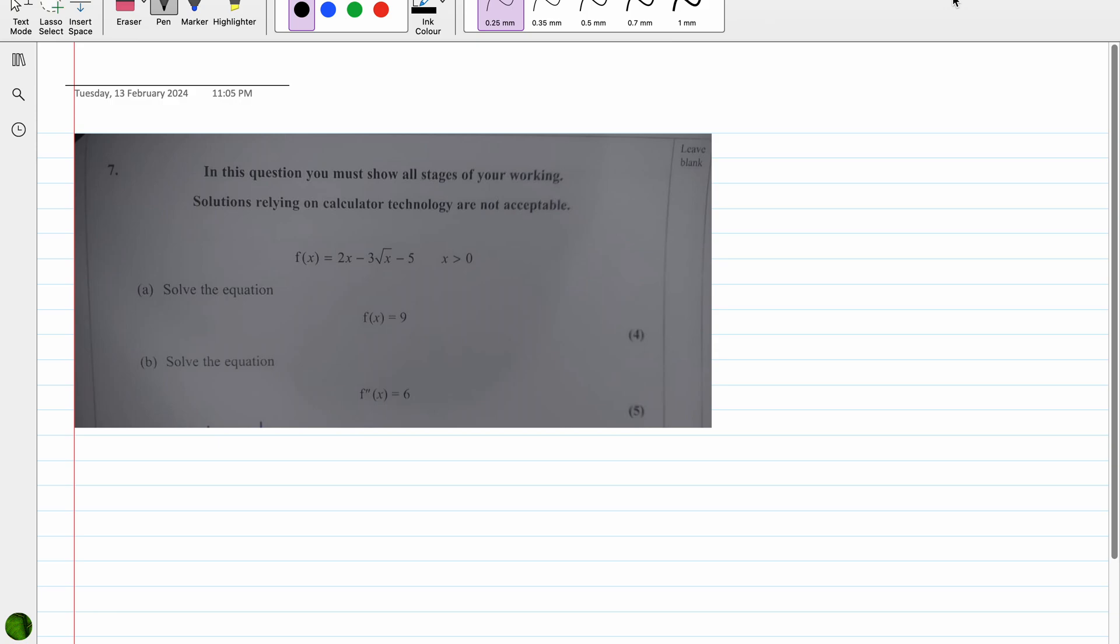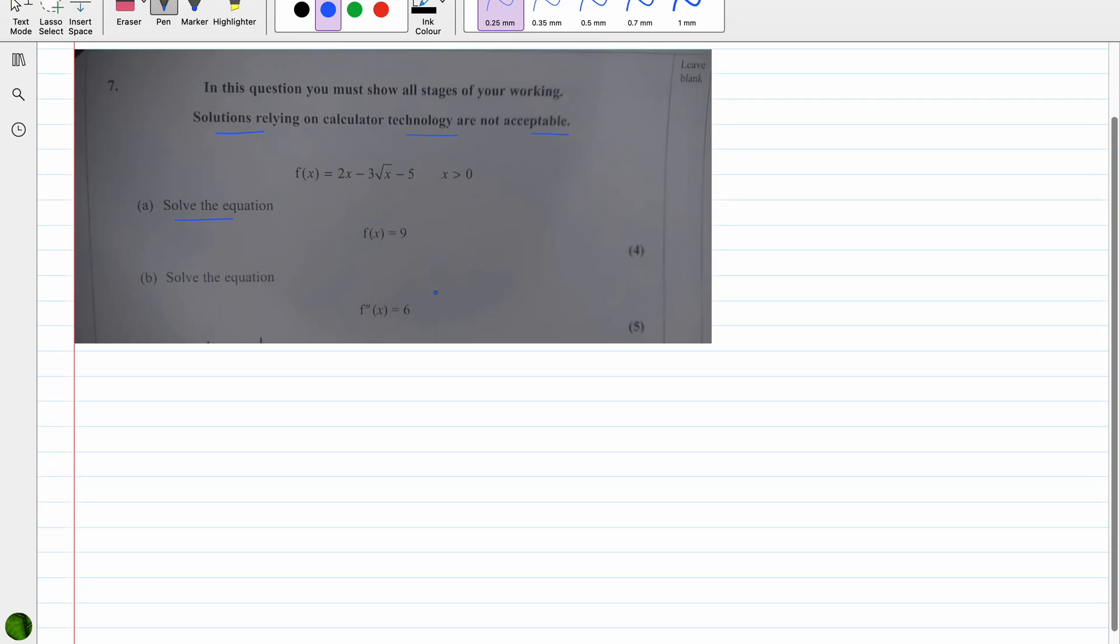The question is from functions. It says in this question you must show all stages of your working. Solutions relying on calculator technology are not acceptable. So solve f(x) = 9. First of all, I'm going to copy that: f(x) = 2x - 3√x - 5.